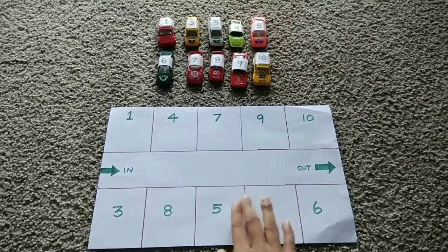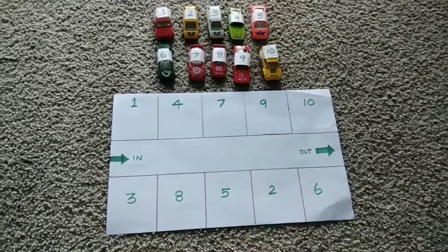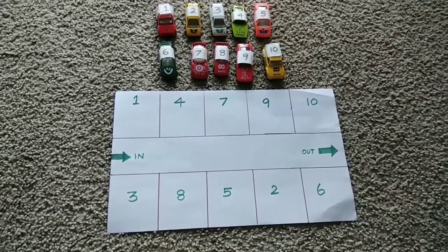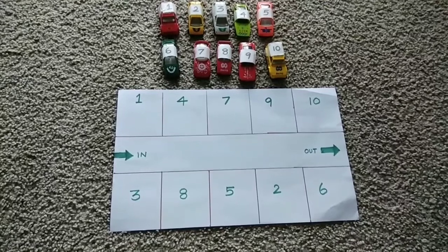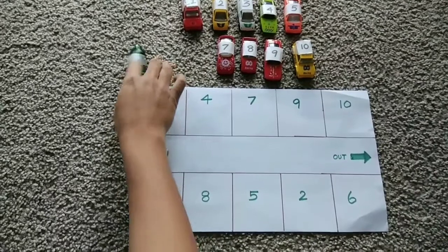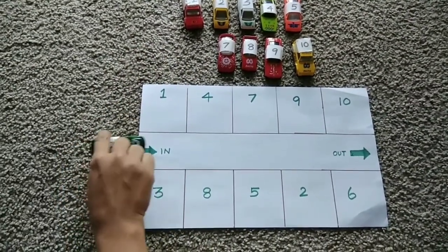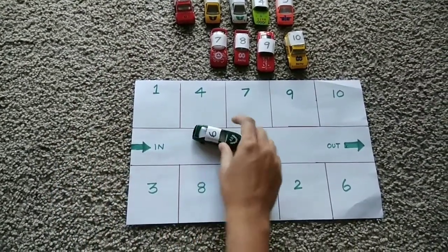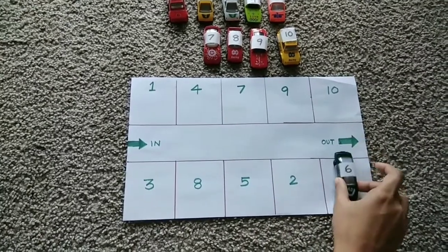So ask your kid to park the cars in the respective slot. For example, if they take the number 6, they have to come in this way and then they have to park in the number 6 slot.